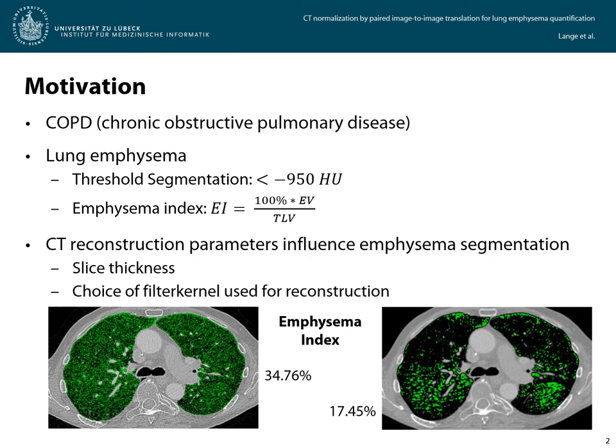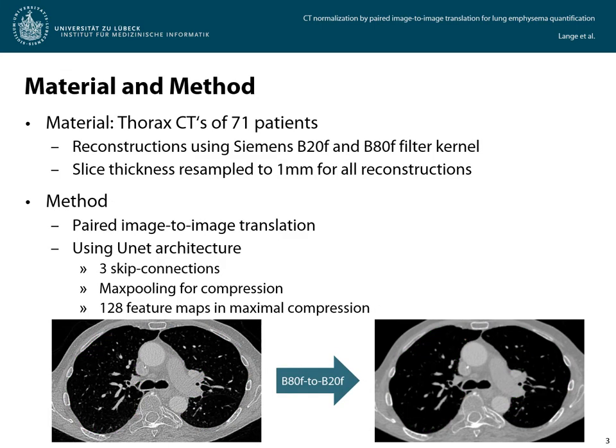For this work, we concentrated on the choice of the filter kernel. In the example below, you can see the extreme difference in emphysema segmentations and the calculated emphysema index of one patient due to the choice of the reconstruction kernel. Chest CTs of 71 patients reconstructed with both the smooth Siemens B20F and the sharp Siemens B80F filter kernel were available. For all reconstructions, the slice thickness was resampled to 1 mm.